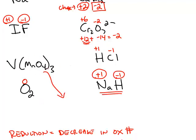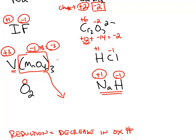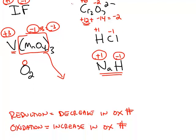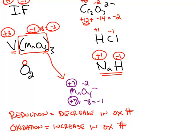For the last example, we have a polyatomic ion. We're figuring out the oxidation number for vanadium, and the permanganate polyatomic has a charge of negative 1. Three of those make a total of negative 3, so vanadium must be positive 3 for the net charge to be zero. Looking at permanganate by itself: oxygen is more electronegative at negative 2, four of those make negative 8, so manganese must be positive 7. The oxidation number of manganese is positive 7 and oxygen is negative 2.